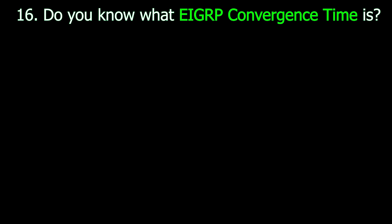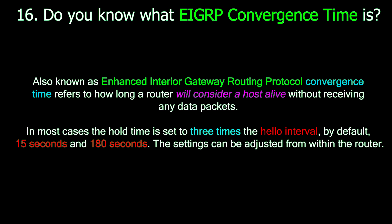Question number sixteen: Do you know what EIGRP Convergence Time is? Also known as Enhanced Interior Gateway Routing Protocol, Convergence Time refers to how long a router will consider a host alive without receiving any data packets. In most cases, the hold time is set to three times the hello interval — by default 15 seconds and 180 seconds. The settings can be adjusted from within the router.